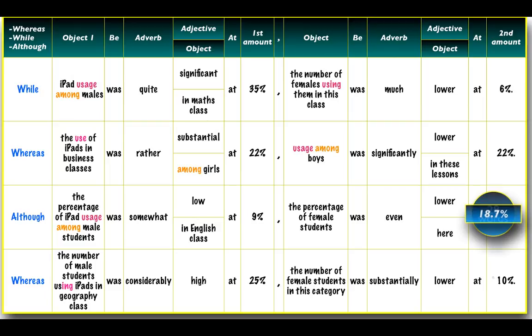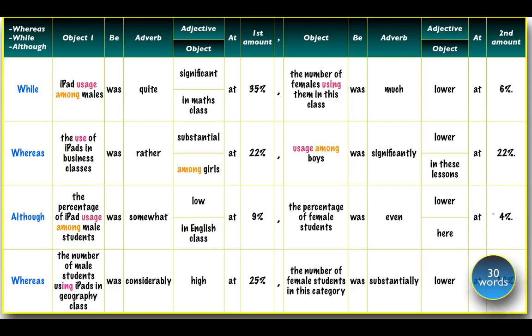We netted a hefty 30 words in the first sentence, which is 20% of 150 words. 27 words is 18%, 26 words is 17.3%, and 28 words is 18.7%. These are well-written long sentences, so there isn't a problem with them.